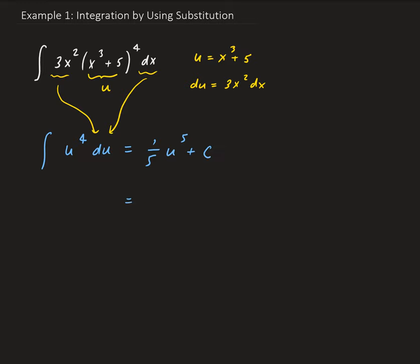And we can go ahead and replace u with x³ + 5. So we end up getting (1/5)(x³ + 5)⁵ + c. And that is our solution.